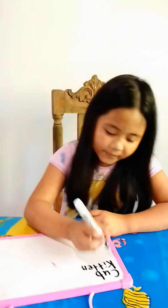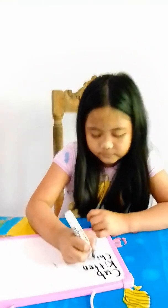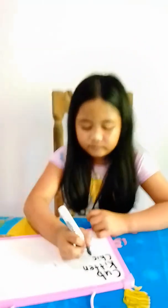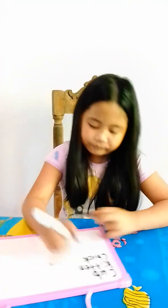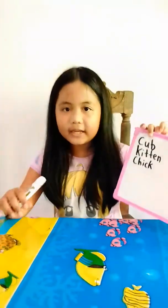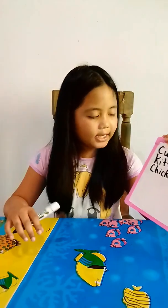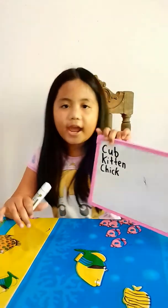The baby of a chicken is a chick. The spelling is C-H-I-C-K.